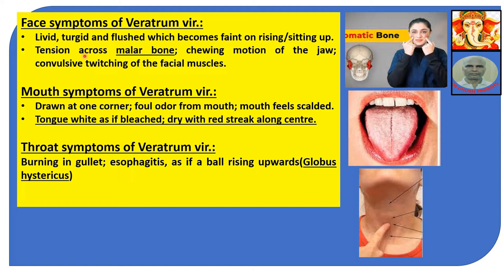Face symptoms of Veratrum Viride: livid, turgid, and flushed, which becomes faint on rising or sitting up. Tension across the malar bone. Chewing motion of the jaw. Convulsive twitching of the facial muscles. The malar bone position is demonstrated on the skull and on a live person.